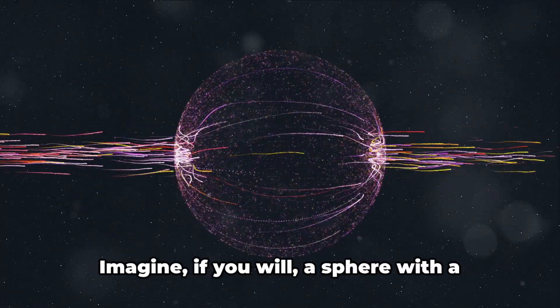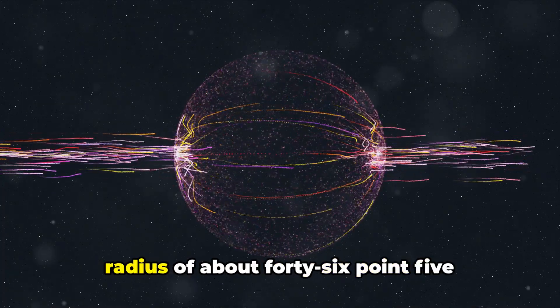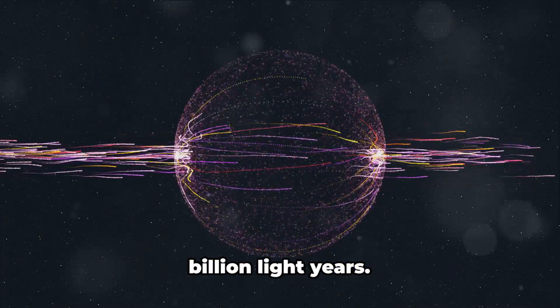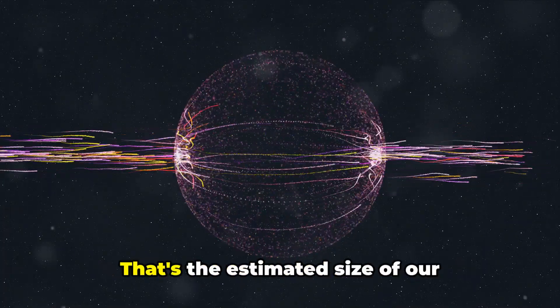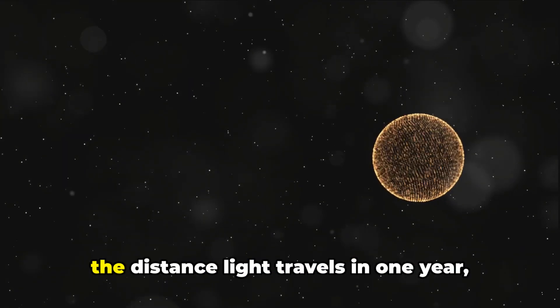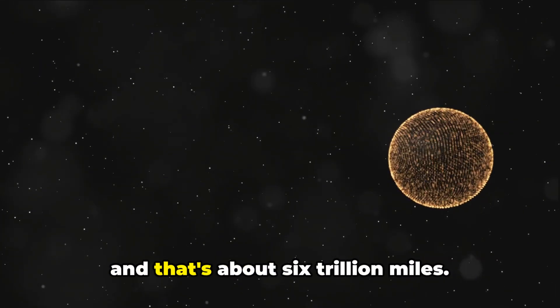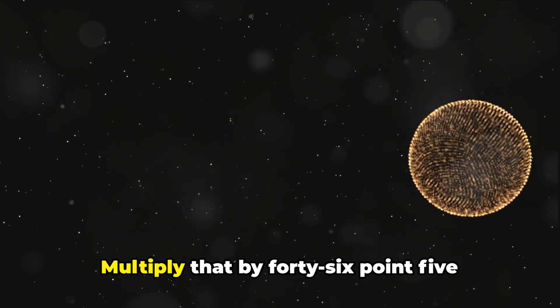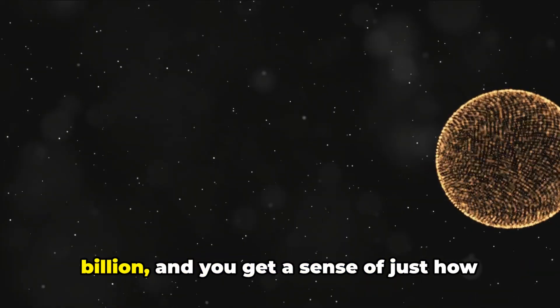Now let's talk size. Imagine a sphere with a radius of about 46.5 billion light years. That's the estimated size of our observable universe. To put it in perspective, a light year is the distance light travels in one year, about 6 trillion miles. Multiply that by 46.5 billion, and you get a sense of just how immense this sphere is.